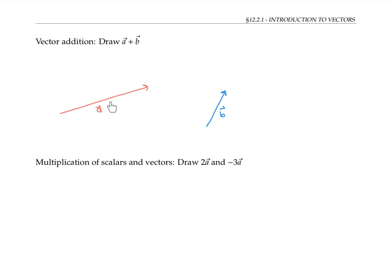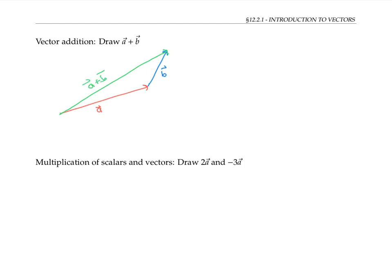If we have a vector a and a vector b, we can define the vector a plus b as follows. First, we move the vectors so that they're end to end — that is, the terminal point of a coincides with the initial point of b. Then we draw a straight line from the initial point of a to the terminal point of b to complete the triangle. That's our vector a plus b.